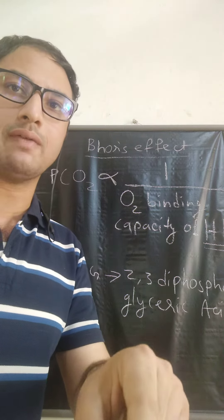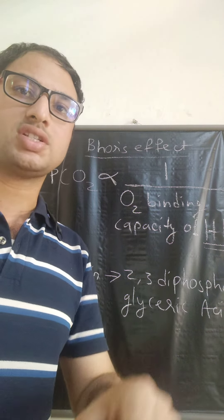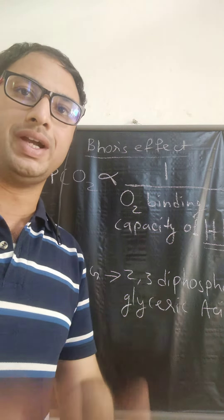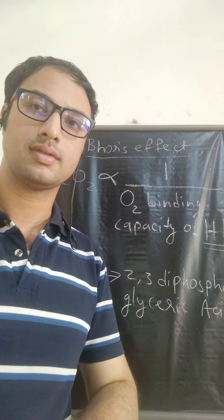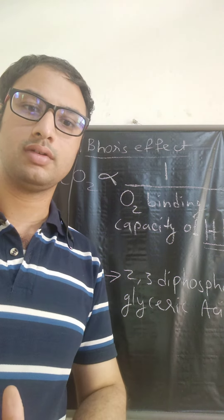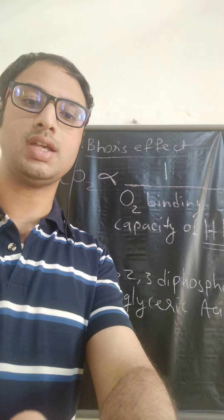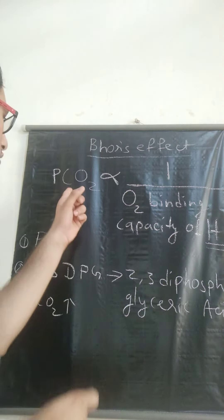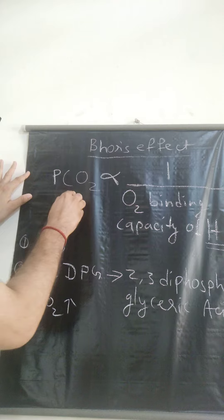With increase in PCO2 level, the oxygen binding capacity of hemoglobin decreases. With increase in PCO2 level, suppose if the PCO2 level is increasing, then oxygen binding capacity of hemoglobin will decrease.